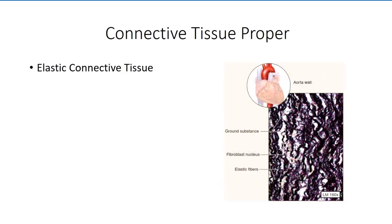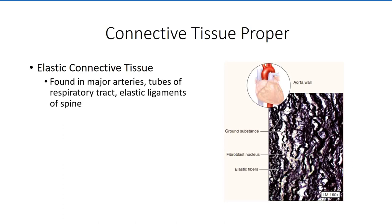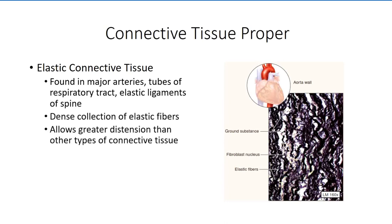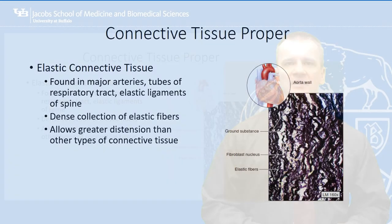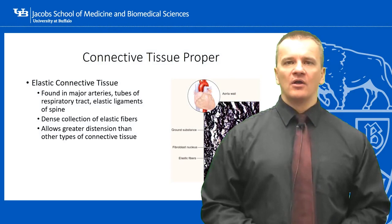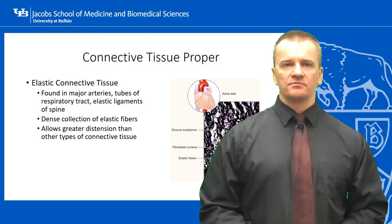The final type of dense connective tissue is elastic. This can be found in the lining of larger arteries and respiratory tubules and also makes up a large portion of the ligamentum flavum of the spine. Elastic connective tissue contains high concentrations of elastin protein. It therefore allows greater distension than is seen with dense regular and irregular connective tissue, and the elastic fibers allow recoil when the tissue does become stretched.